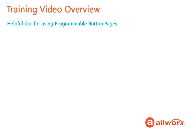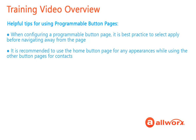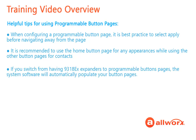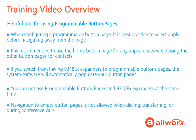Here are some helpful tips for using the programmable button pages. When configuring a programmable button page, it is best practice to select Apply before navigating away from a particular page to reduce the chance of losing any unsaved configured buttons. It is recommended to use the Home button page for any appearances while using the other button pages for contacts. If you switch from having 9318 EX expanders to programmable button pages, the system software will automatically populate your button pages. You can also switch from programmable button pages to 9318 EX expanders; however, you cannot use both at the same time. Finally, you cannot navigate to empty pages when dialing, transferring, or during conference calls, and a pop-up message will not be displayed.